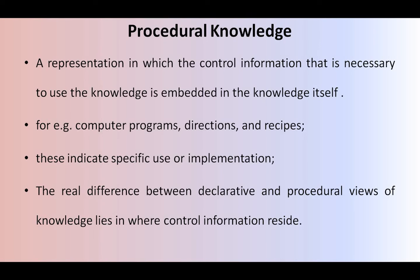So what is procedural knowledge? The control information which is necessary to represent knowledge is called procedural knowledge. The best examples are controlling knowledge, controlling information in the concept of computer programs, directions, and recipes. These indicate some specific use and some kind of implementation techniques. Even in computer programs they have some implementation techniques. The difference between procedural and declarative knowledge is where the control information resides.